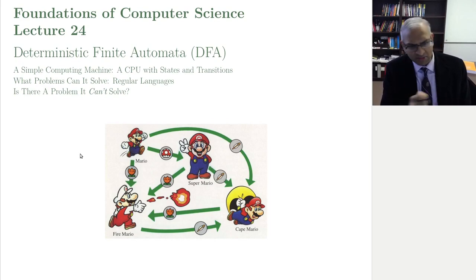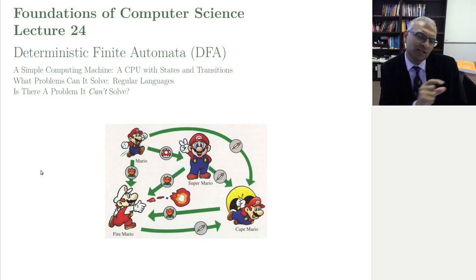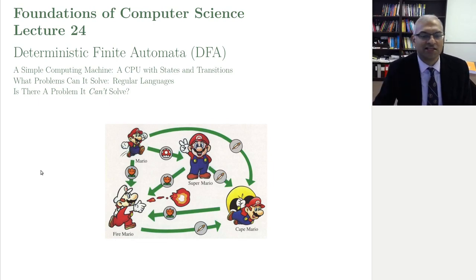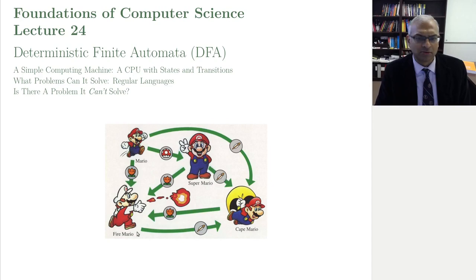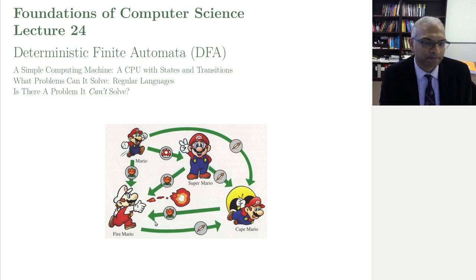Mario eats things — mushrooms, fire things, feathers — and this sequence of things that Mario eats can be considered as an input sequence. As Mario eats things, Mario changes states to Fire Mario, Super Mario, Cape Mario, and so on. So Mario is an example of a finite state machine, an automaton.